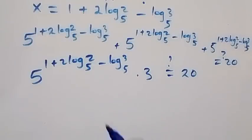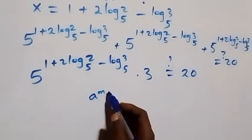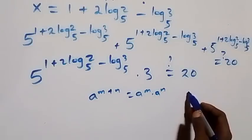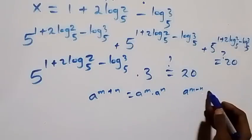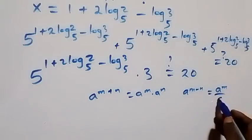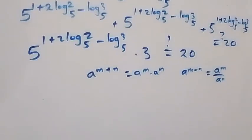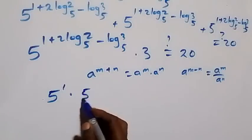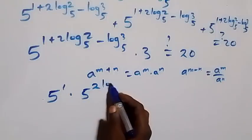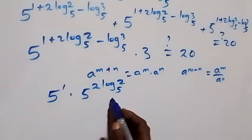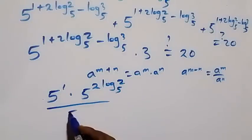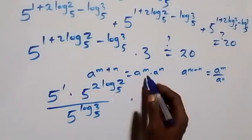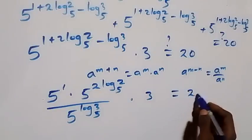Following the law of indices, a raised to power m plus n equals a raised to power m times a raised to power n, and a raised to power m minus n equals a raised to power m over a raised to power n. So what we have can be written as 5 raised to power 1, times 5 raised to power 2 log 2 base 5, divided by 5 raised to power log 3 base 5, times 3, equals 20.